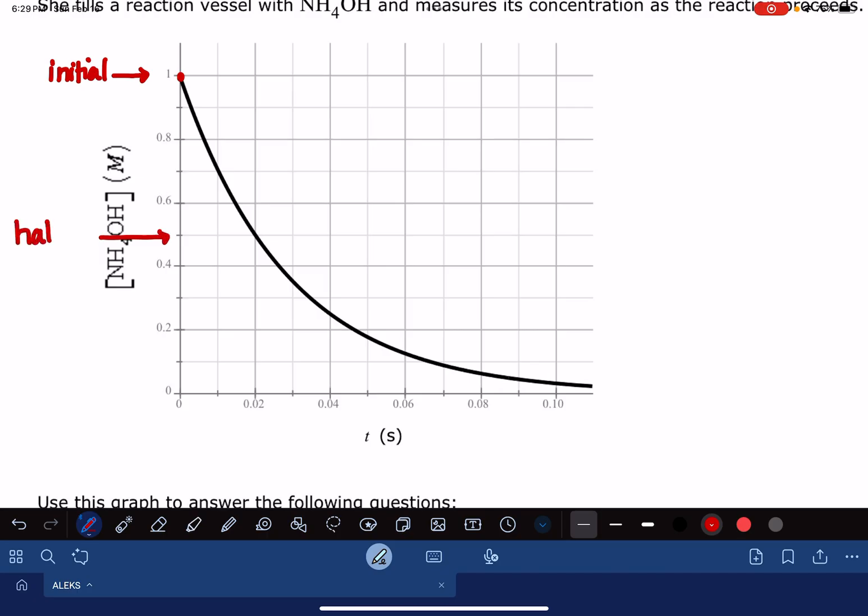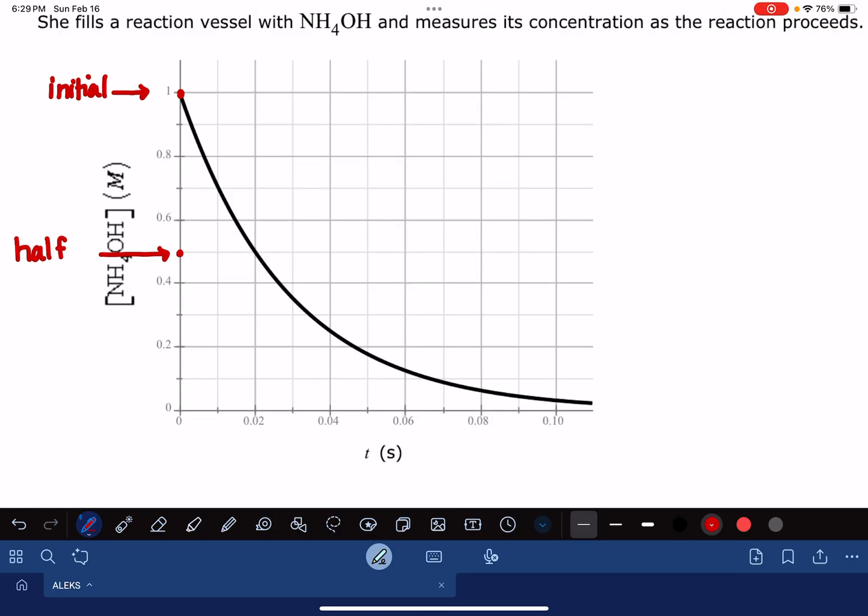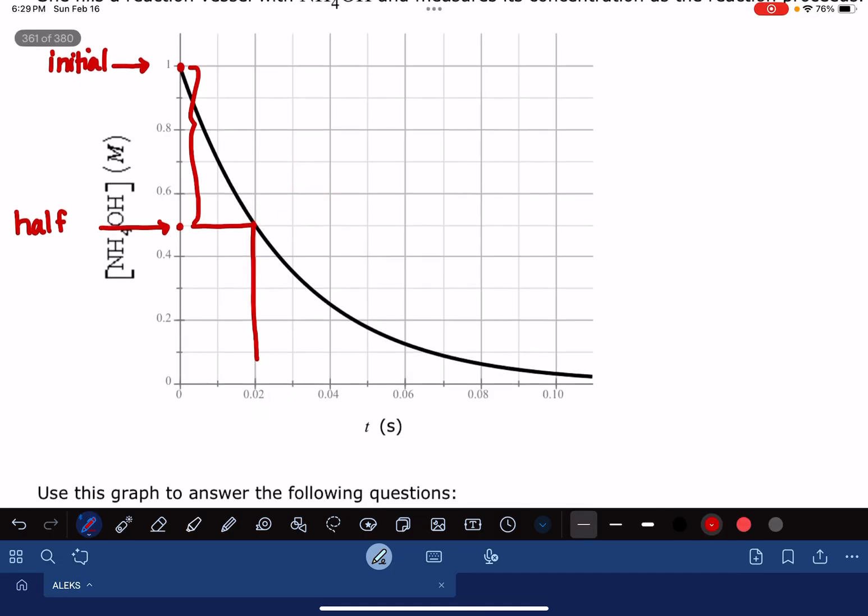1 divided in half is going to be 0.5. That is where my concentration has been divided in half. And again, what I want is the time that corresponds with the concentration being decreased in half. So how long did it take for my concentration to drop down to 0.5? I'm just going to read that time from the graph right here.